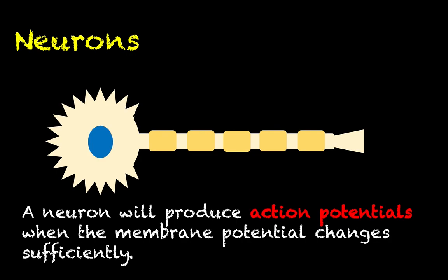What a neuron is going to do is produce action potentials, which are waves of ion movement that travel down the length of the axon and serve as basically a current that carries the message down the axon. A neuron will only fire off these action potentials when the membrane potential changes, and changes sufficiently.